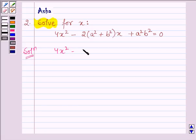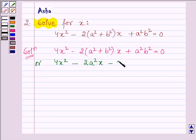Let us write down the given equation, which is 4x² - 2(a² + b²)x + a²b² = 0. This can further be written as 4x² minus, on opening the brackets we have 2a²x - 2b²x + a²b² = 0.